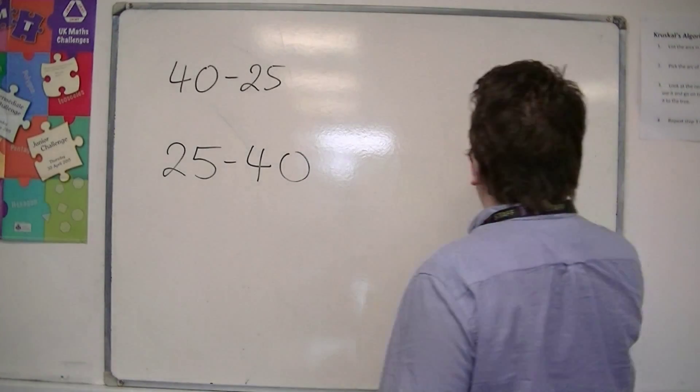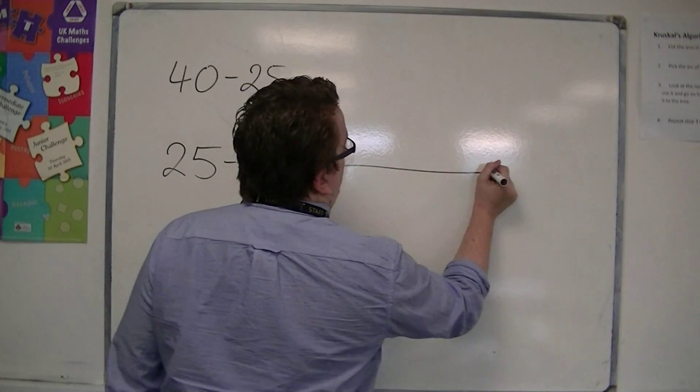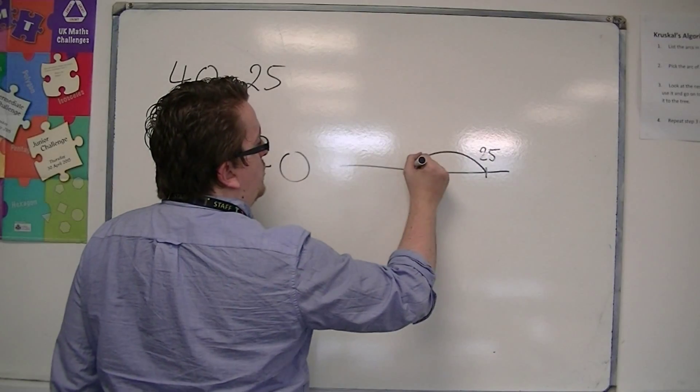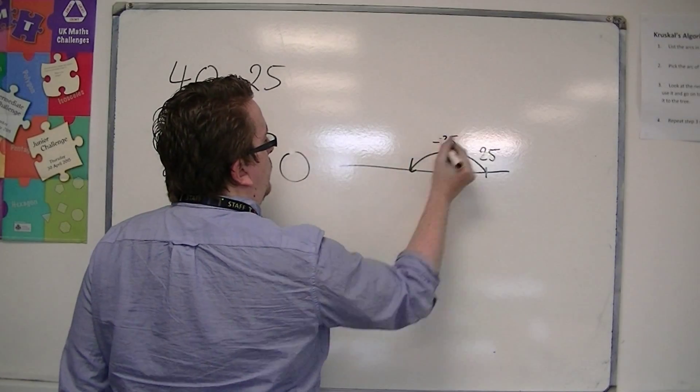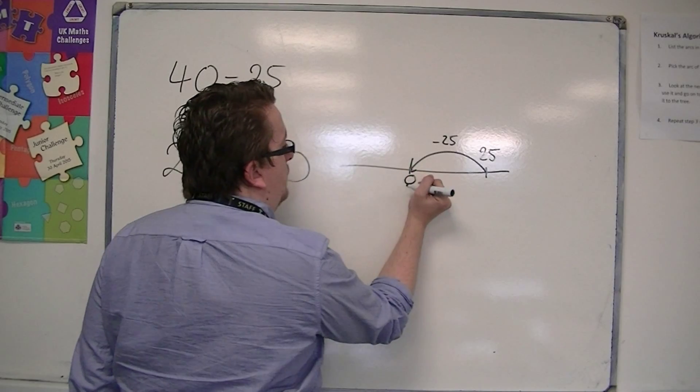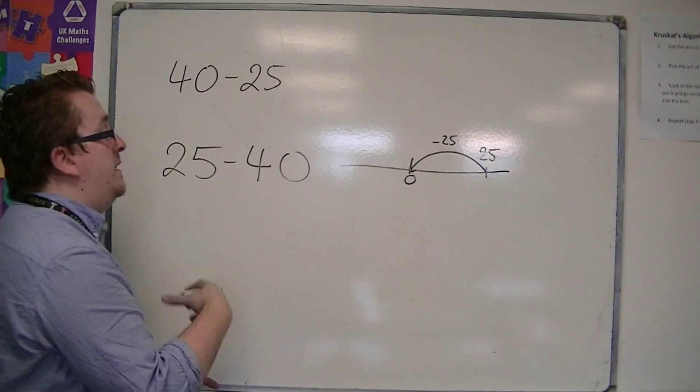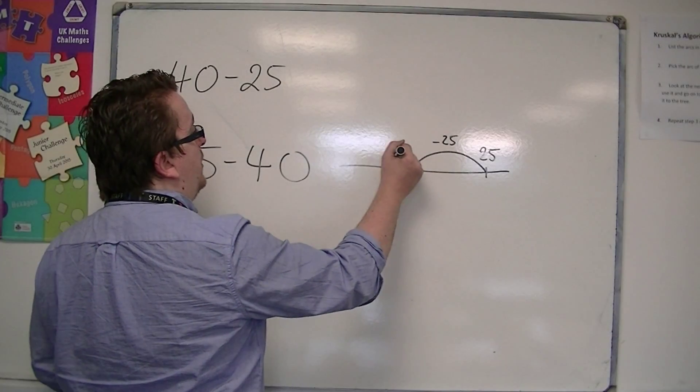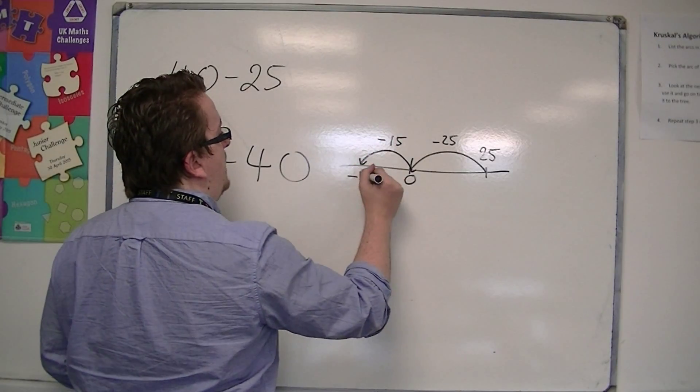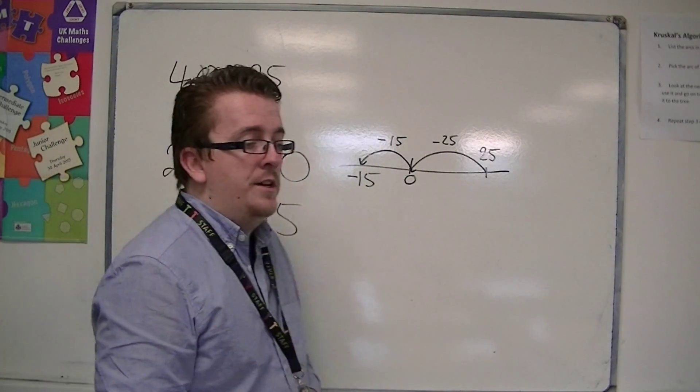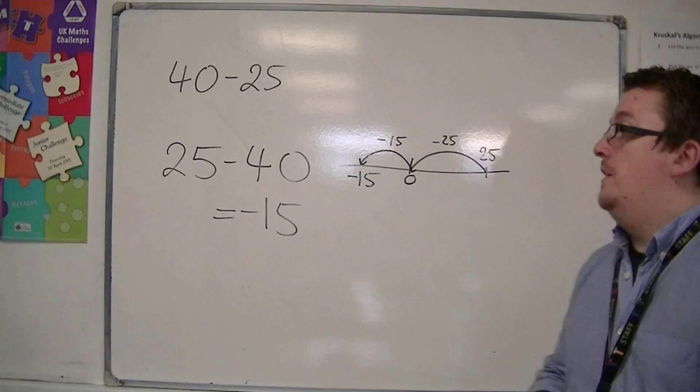You may well have been taught to do this using a number line. So, at 25, if we subtract 25, we would get ourselves to 0. And now I need to subtract another 15 to make sure I've subtracted 40 overall, which would get me to minus 15. So that's all perfectly well and good. 25 take away 40 is minus 15.